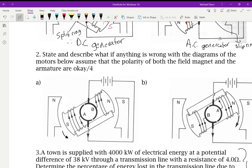How about number two? State and describe what if anything is wrong with the diagrams of these motors. So, these are motors now. It says, assume the polarity of the field magnet and the armature are correct. So, in other words, what's correct in the diagram is these two poles and these two poles. Now, that means the other things, the other items here, could be incorrect. Now, there's only two other items. There's the current, and then there's the direction of rotation.